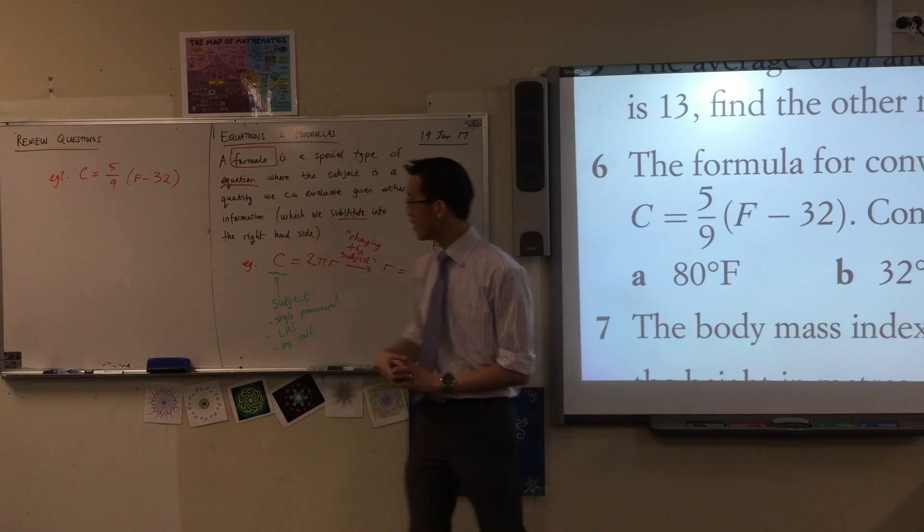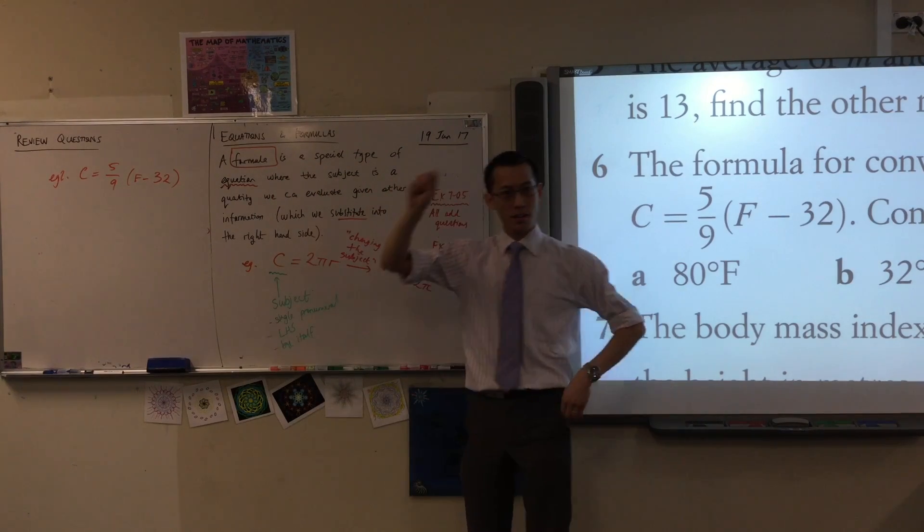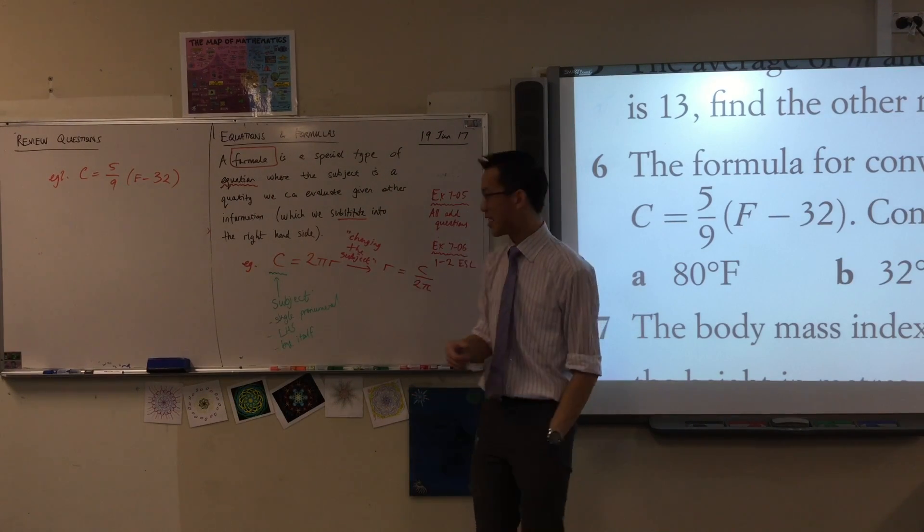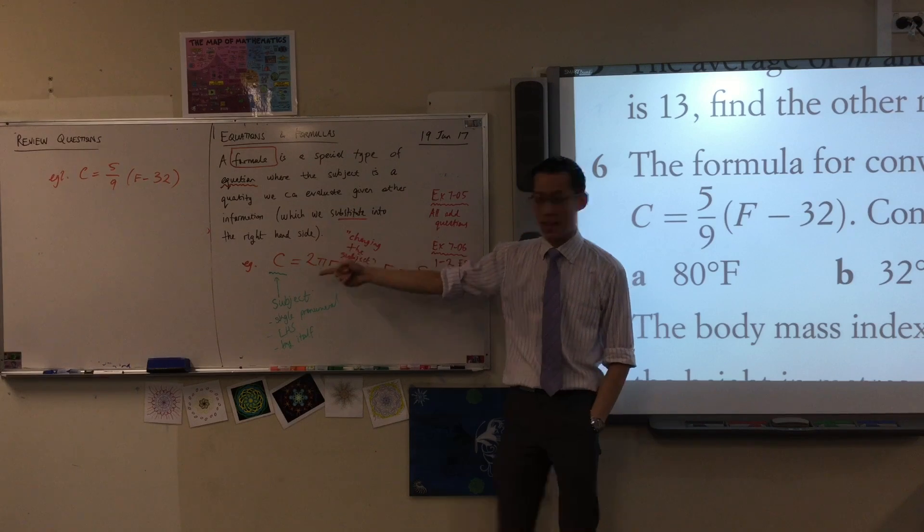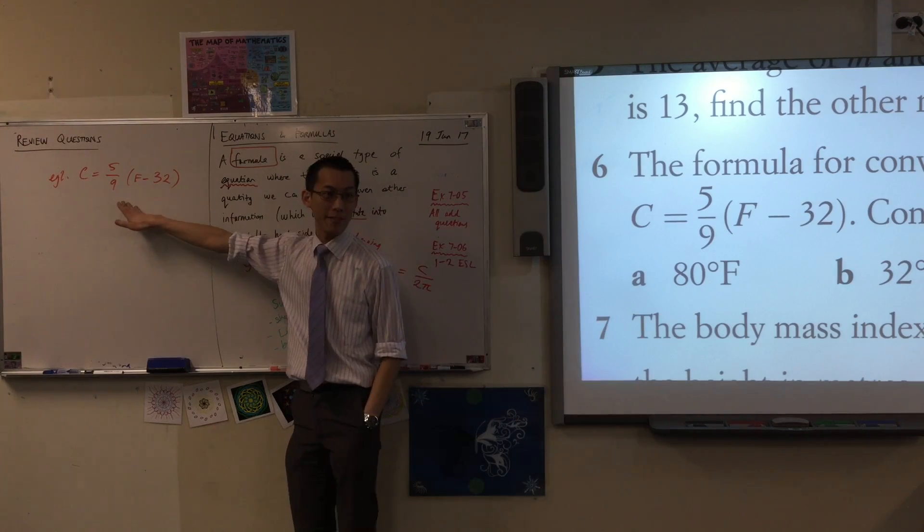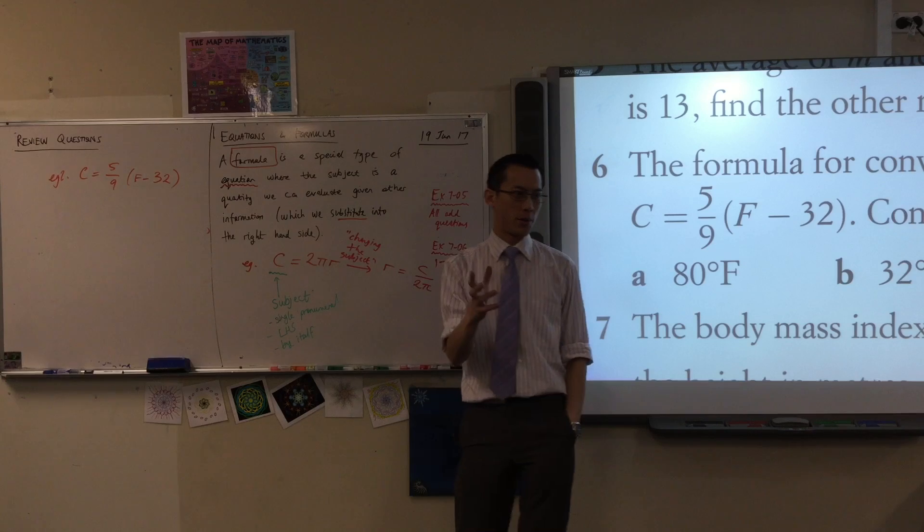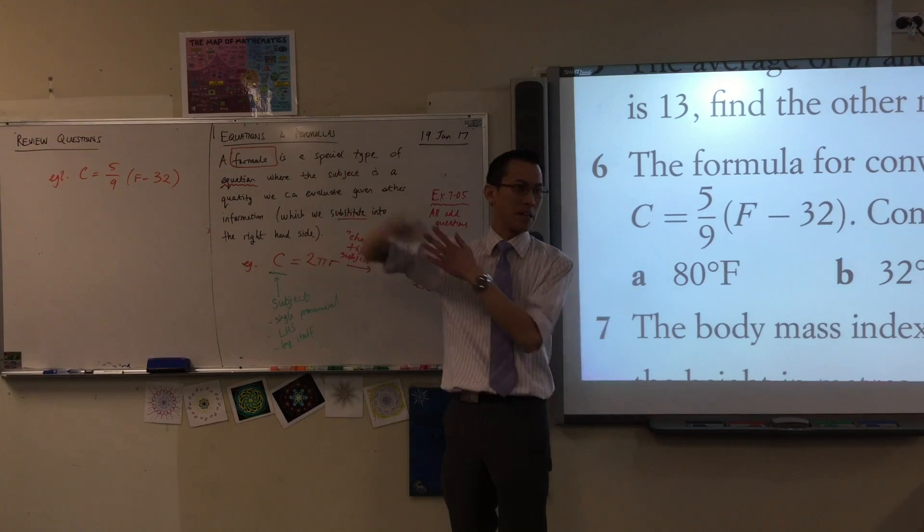So C equals five over nine times (F minus 32). This is a formula for the degrees in Celsius given this other information, the degrees in Fahrenheit. So for example, I don't know if anyone has been to the U.S.